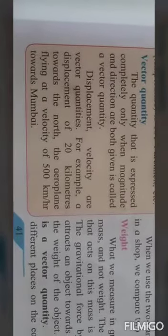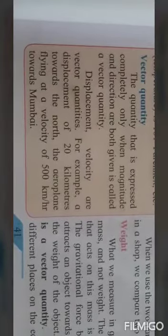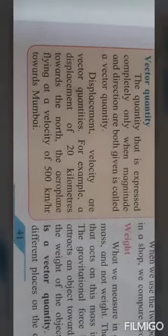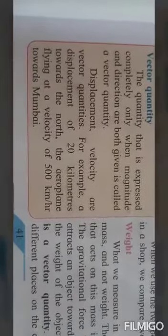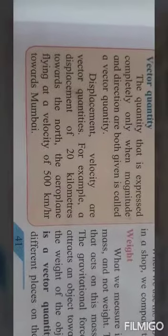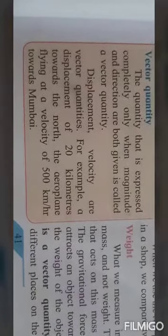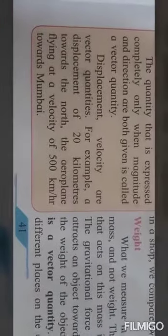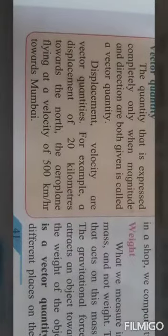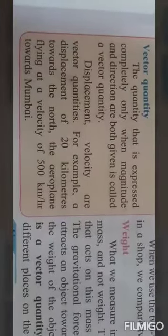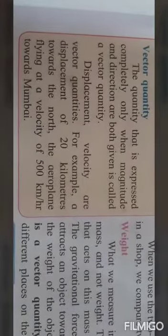For example, the plane is moving at 500 km per hour towards Mumbai. The velocity is given as 500 kilometers per hour, and the direction is given towards Mumbai. When both the value and direction, magnitude and direction, are given, it is called a vector quantity or directional quantity.